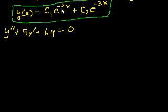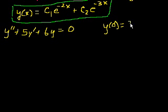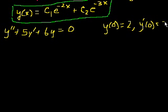The initial conditions given are: y of 0 is equal to 2, and y prime of 0 is equal to 3. So they're giving us what y equals at x equals 0, and what the slope equals at x equals 0 — the slope is 3. So how do we use these to solve for c1 and c2?